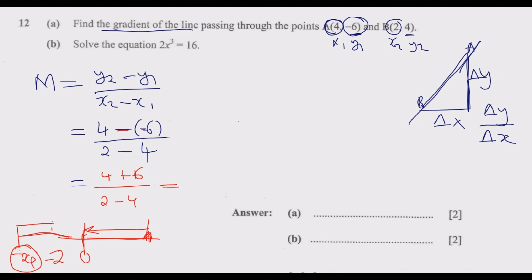When simplified it's 10 over -2, which equals -5. So -5 is the gradient of this line. This is how you answer question 12a. Move to question B.